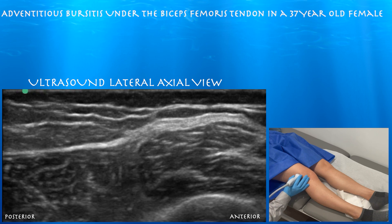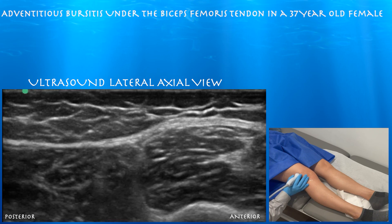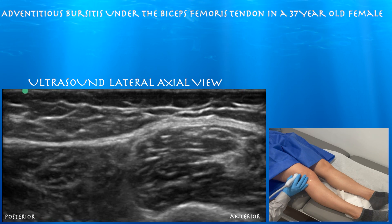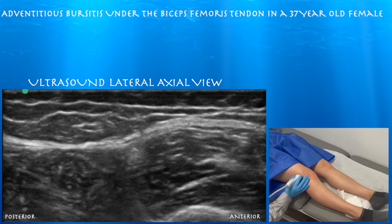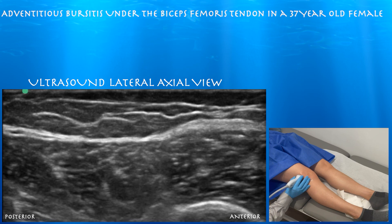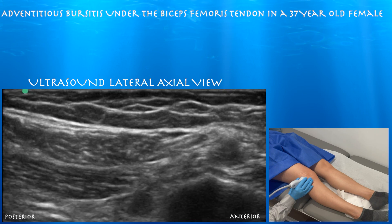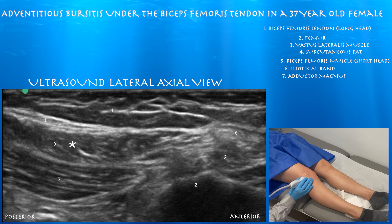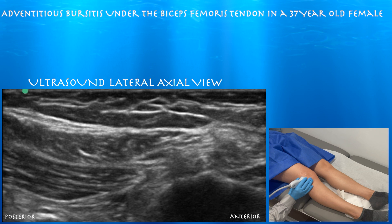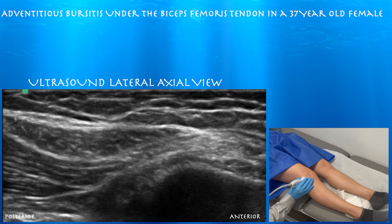Now we're trying to see the ITB and the biceps femoris at the same time. Going down the thigh, you can see how the tendon is starting to form — at least the biceps femoris long head — with the short head muscle underneath that. Deep to that you have the adductor magnus muscle. You can appreciate how the fibers are going in a different direction in the adductor muscle versus the biceps femoris.